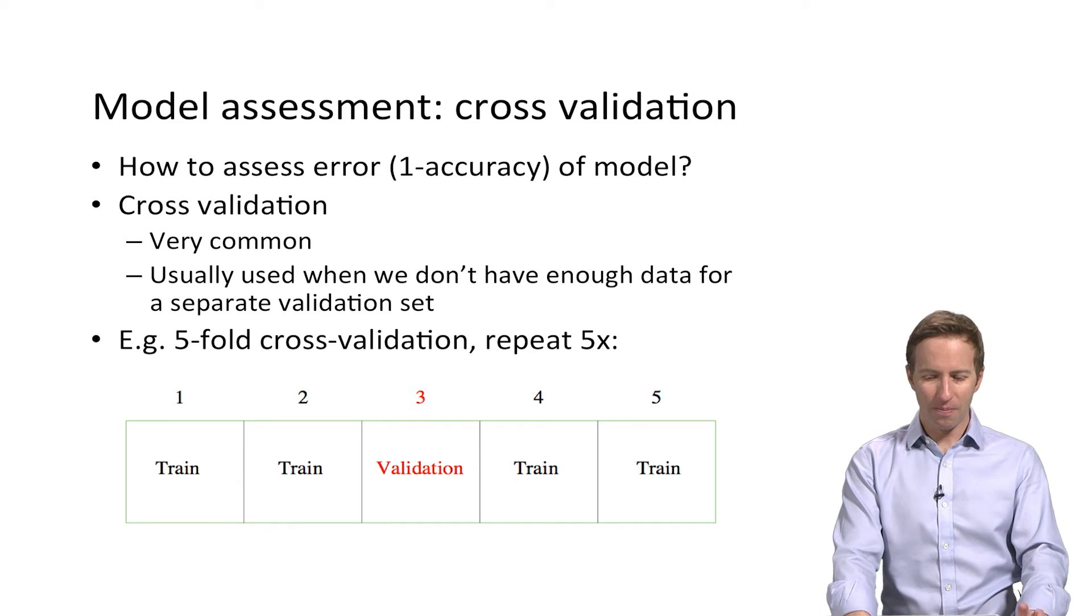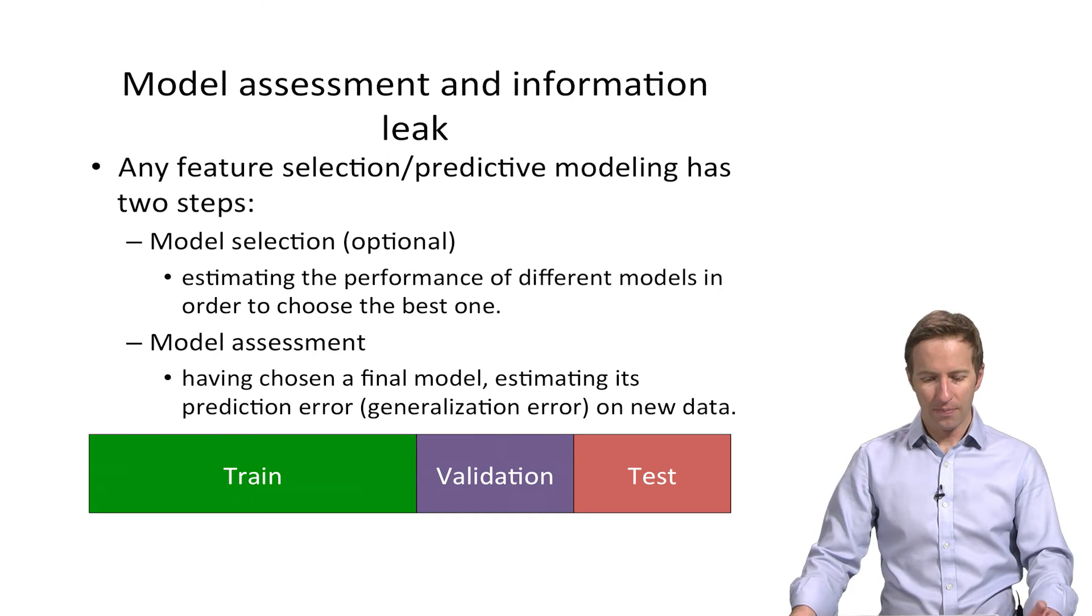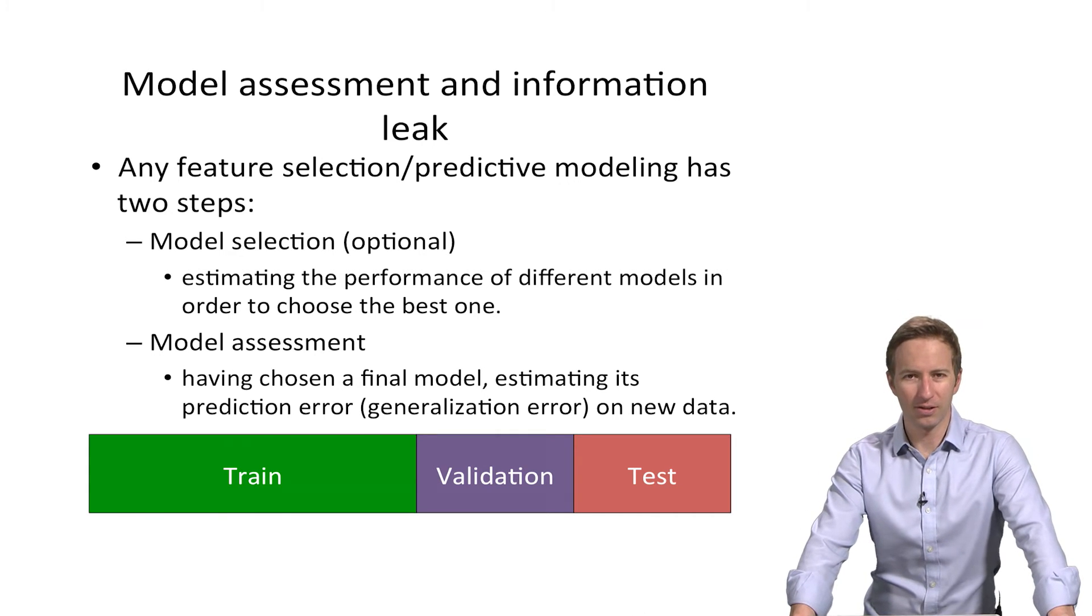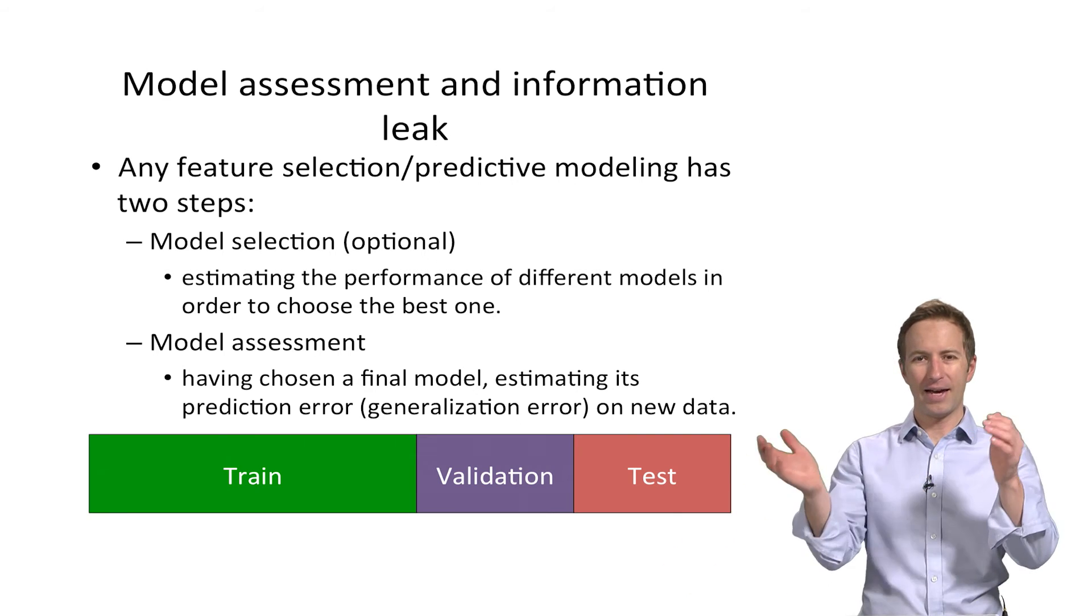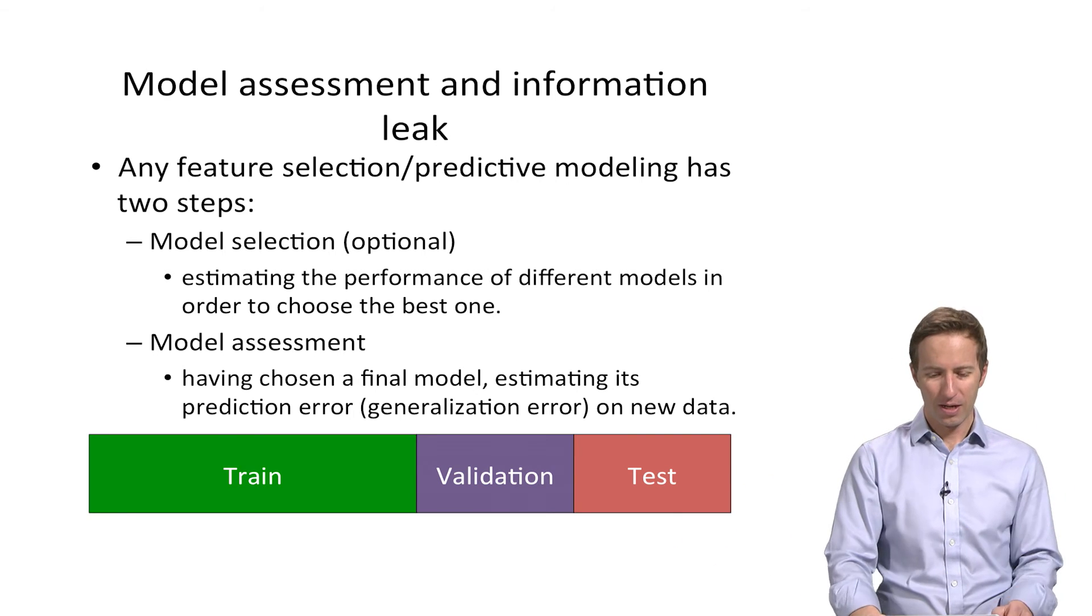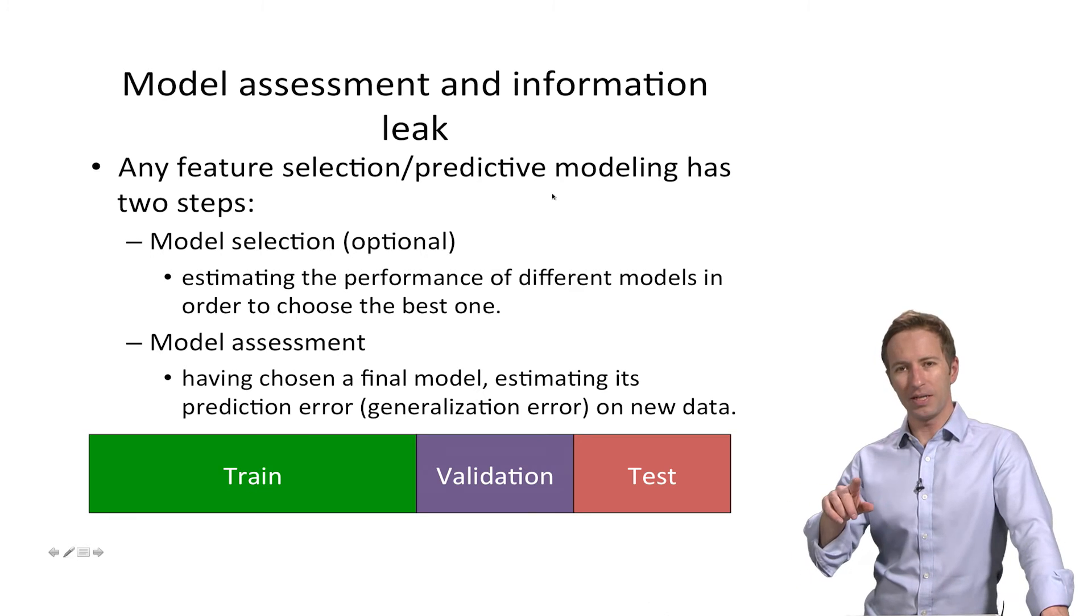So this is very common approach. There's a major risk of overfitting though, that people often succumb to. So I want to take a little bit of time to discuss how you can avoid information leak. And so information leak means that you're not adhering to this requirement that you train the model on one set of data and test it on another set.